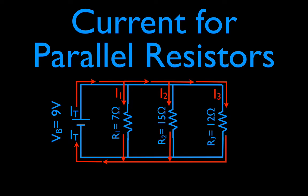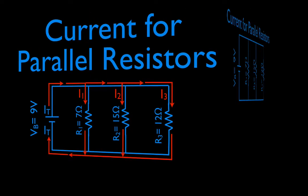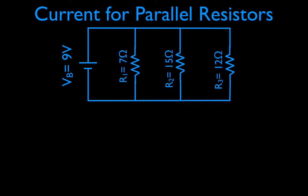In today's video I'm going to go over how current works through parallel resistors. This is the circuit we're going to use, and I'm going to go through first conceptually how the current works for resistors in parallel, and then I'm going to go through how you actually calculate the current through each branch.